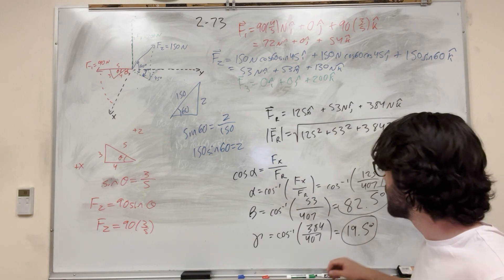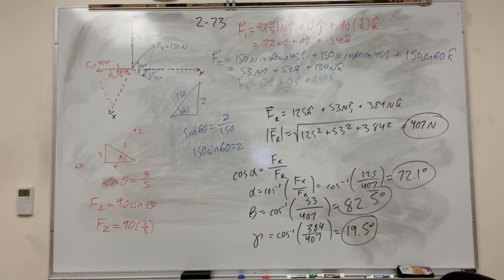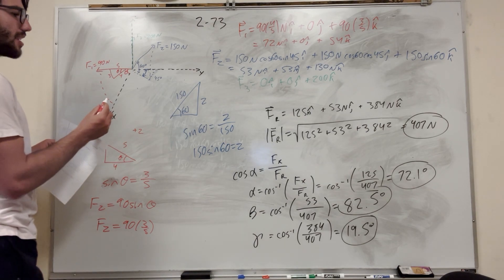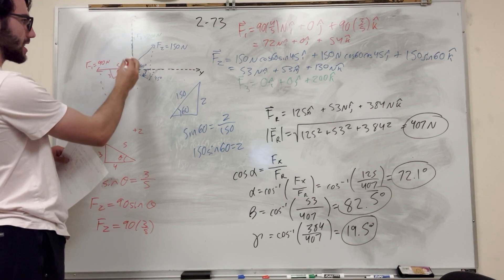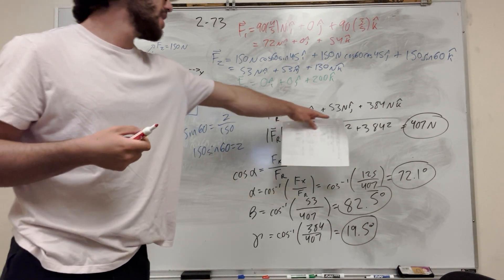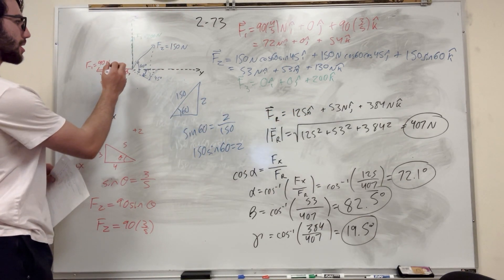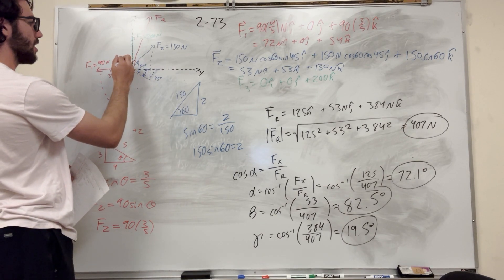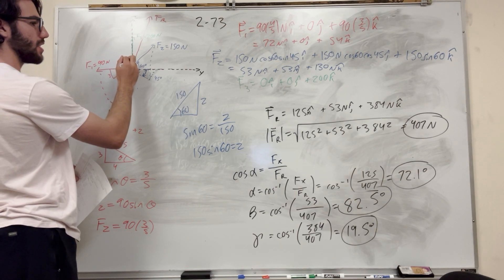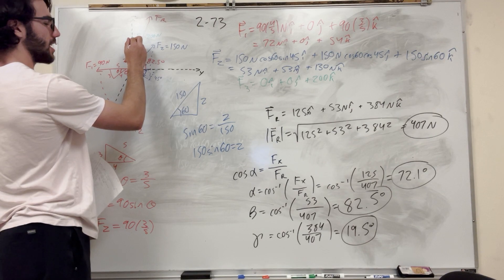Now we just need to graph this resultant force. These angles tell us how far the force is from each axis. It's 72 degrees from the x-axis, 82 degrees from the y-axis, and only 19 degrees from the z-axis — so it's pointing pretty much straight up. The resultant line points high in z, a good amount in x, and hardly at all in y. Alpha = 72.1°, beta = 82.5°, gamma = 19.5°.